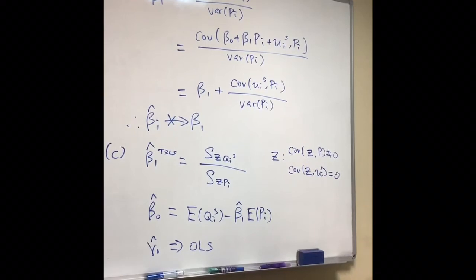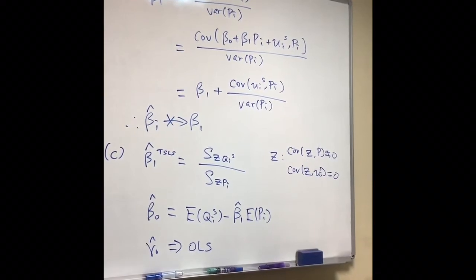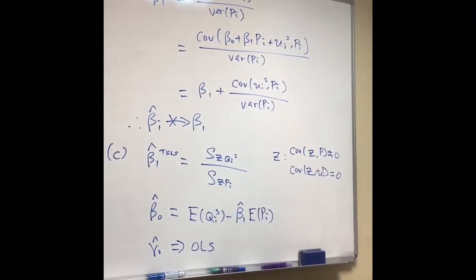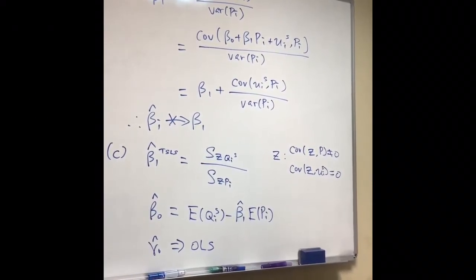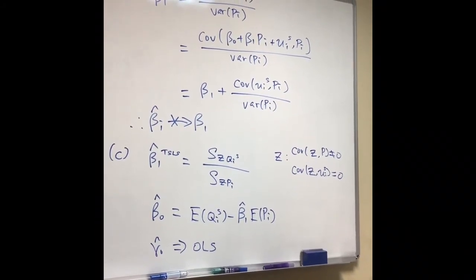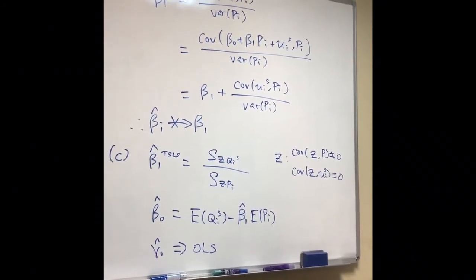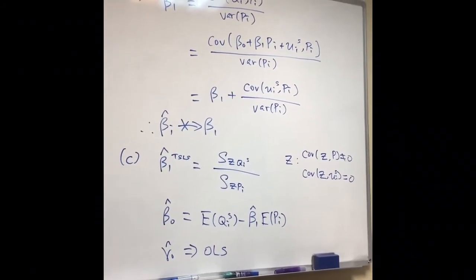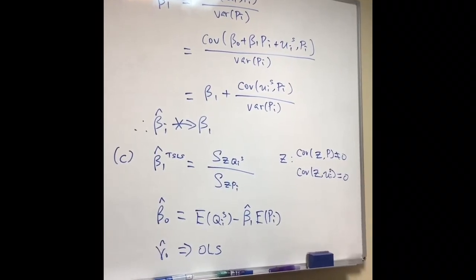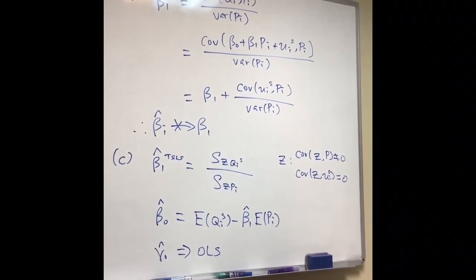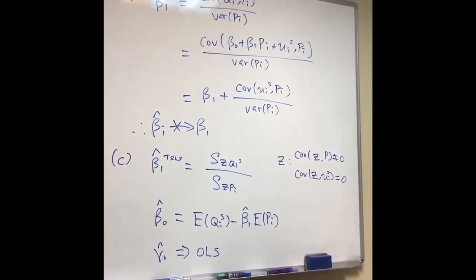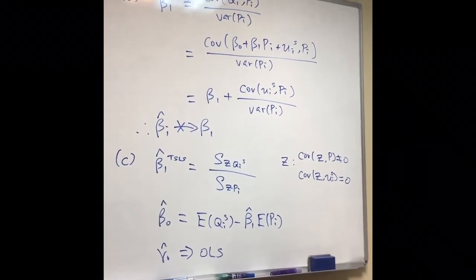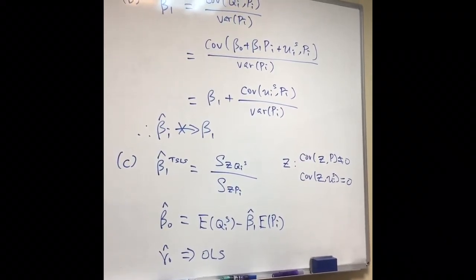You express Q1S as beta_0 plus beta_1 times PI plus UIS. Eventually, you can find that beta_1_hat will converge to beta_1 plus some additional terms. In part A, we showed that the covariance of UIS and PI is not equal to zero.